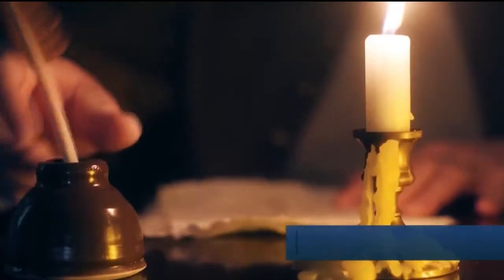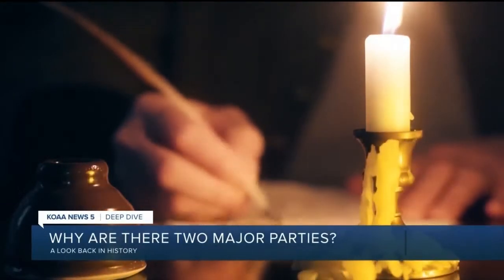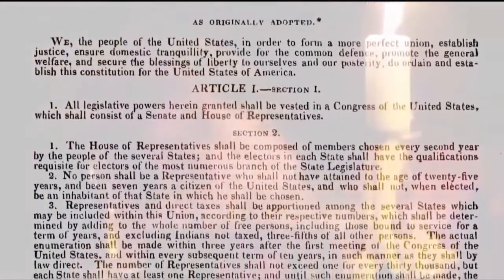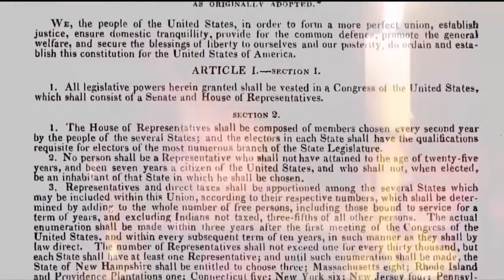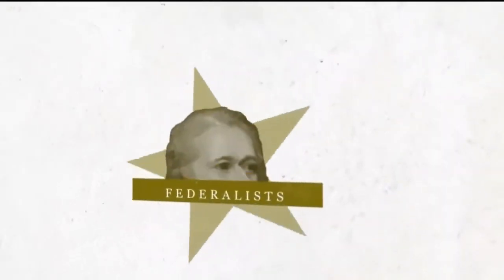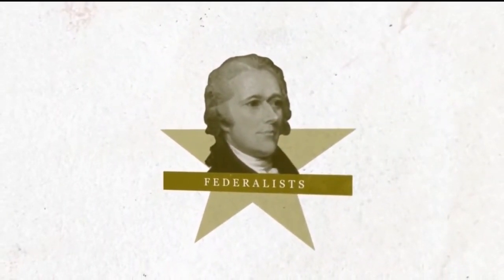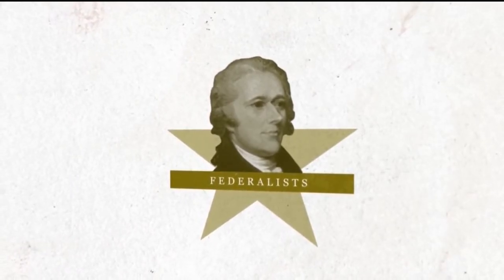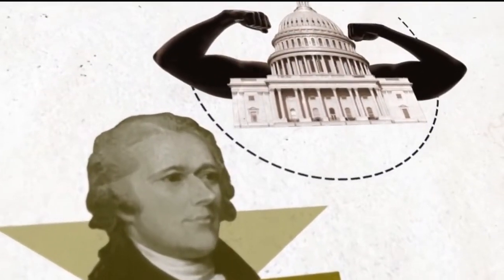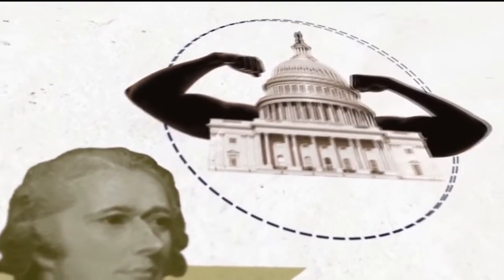It's 1787. Our founding fathers are putting quill to parchment to form a brand new government. Nowhere in this pivotal document is there any mention of political parties. That didn't stop the formation of two distinct visions for a young nation. First were the Federalists, led by a man whose popularity has risen thanks to a Broadway musical — Alexander Hamilton, the first Treasury Secretary. His party believed in a strong central government and a looser interpretation of the Constitution.